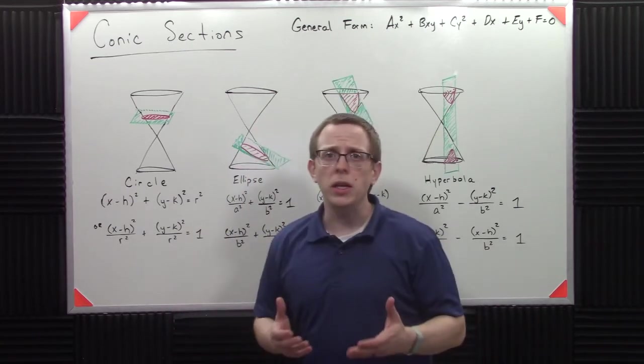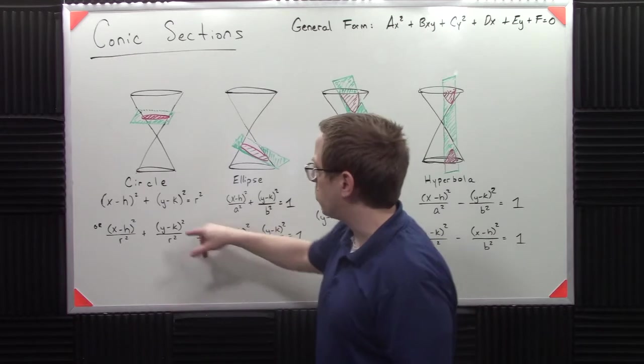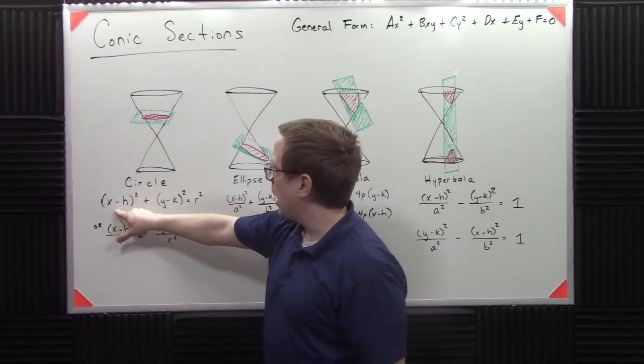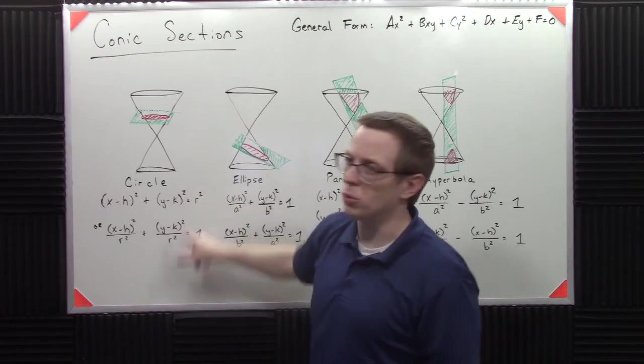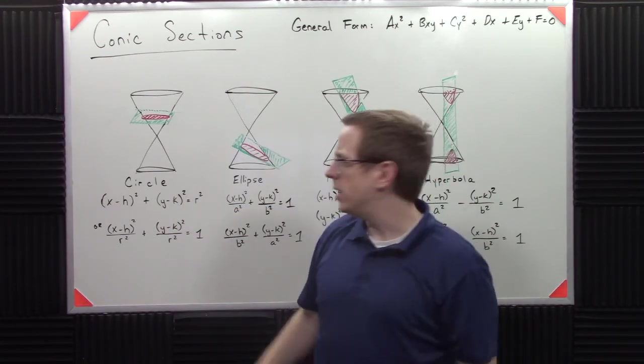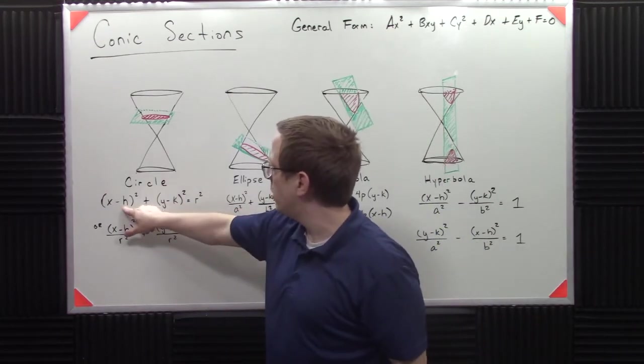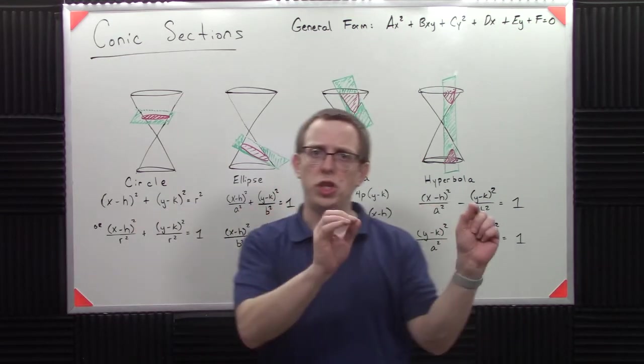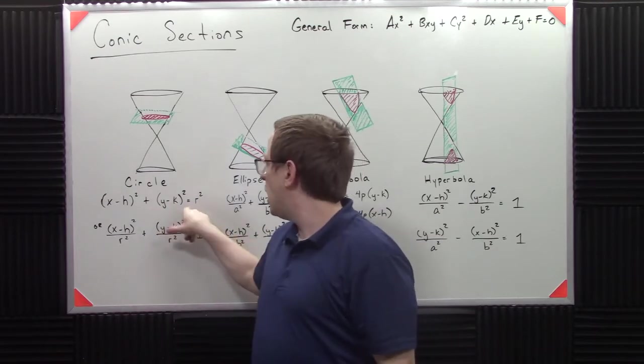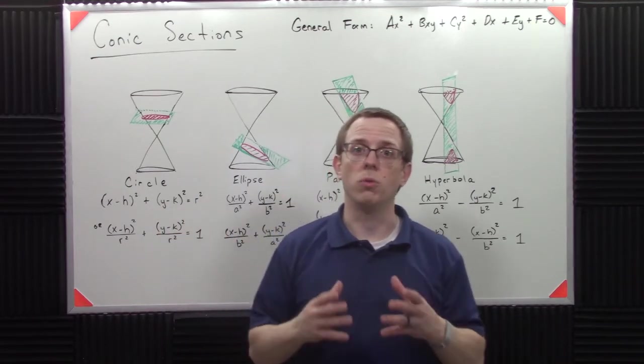Now algebraically the way we represent this is with this type of equation: X minus H squared plus Y minus K squared equals R squared. Now what this really is, is that this is the center point. H and K is that center point. So those are really just horizontal and vertical shifts. And then R is the radius.